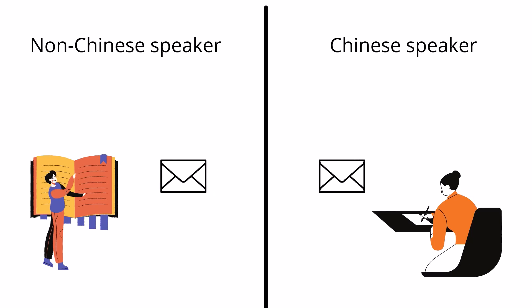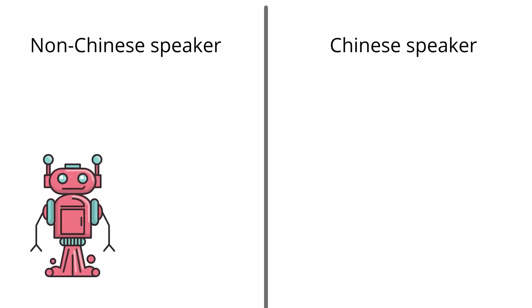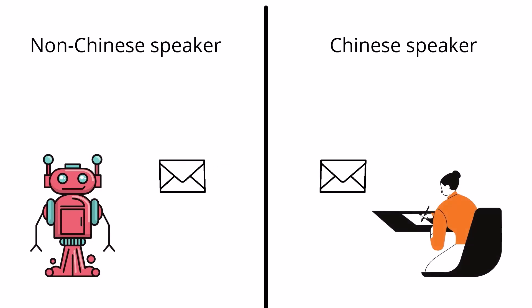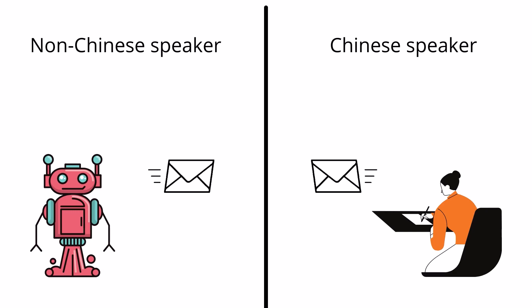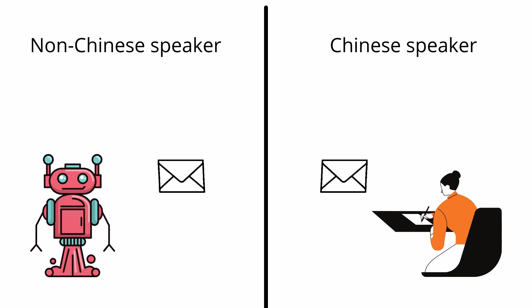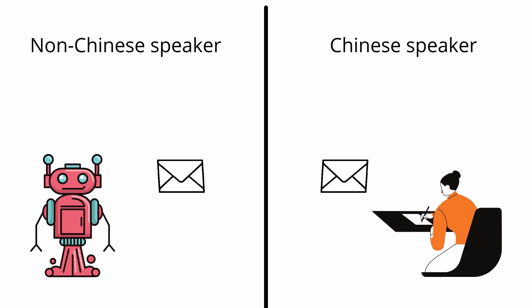The person in the room would use the instruction manual and the Chinese characters to answer the person outside the room. Imagine the person in the room to be a program — if it successfully convinced the person outside that they were communicating with a native Chinese speaker, the program would have passed the Turing test. However, John Searle pointed out that even though the program can make human-like conversations and pass the Turing test, it would have no understanding of the language, as it does not think and has no mind of its own.